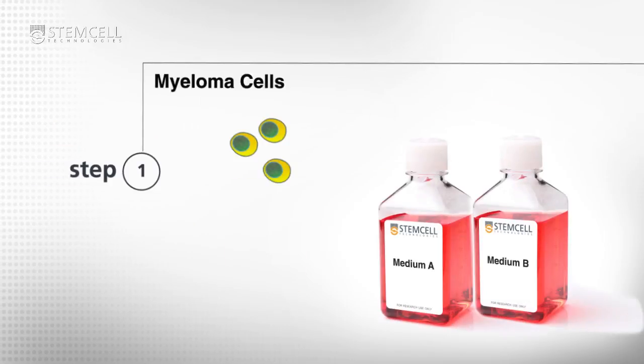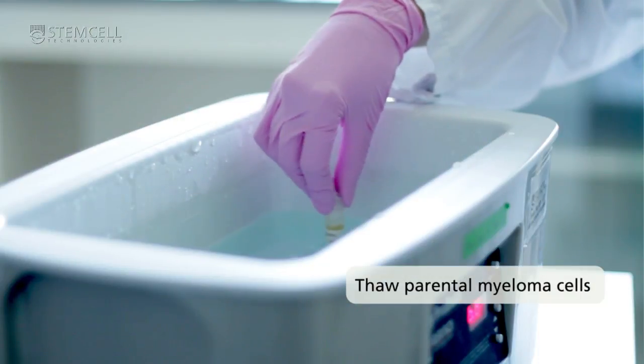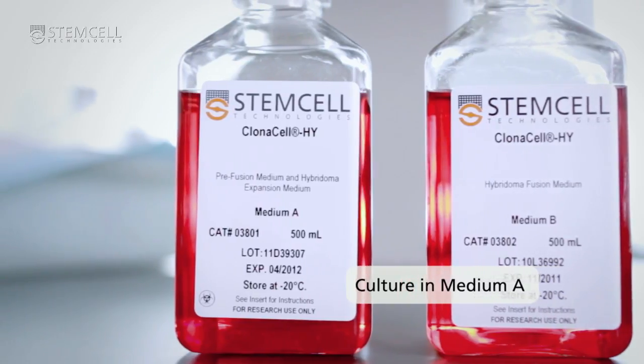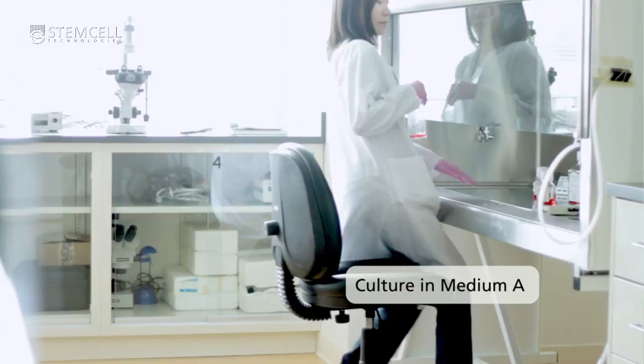To prepare myeloma cells, thaw the parental myeloma cells and culture in medium A for at least one week prior to fusion. There must be at least 20 million parental myeloma cells available for fusion. Harvest parental myeloma cells by transferring to a tube and centrifuging.